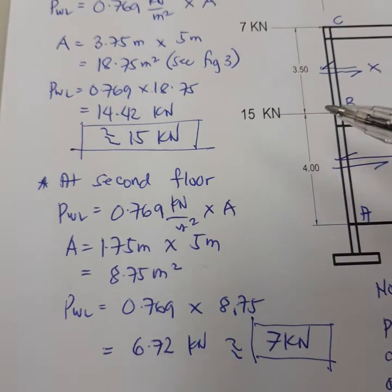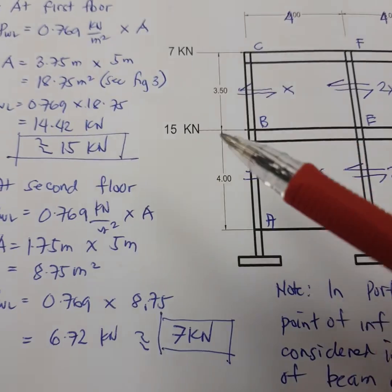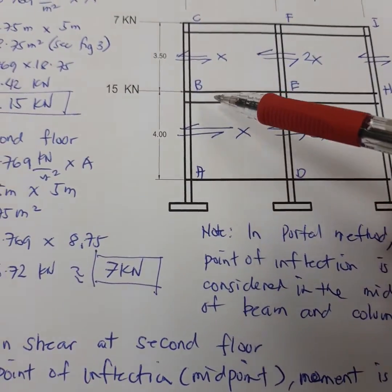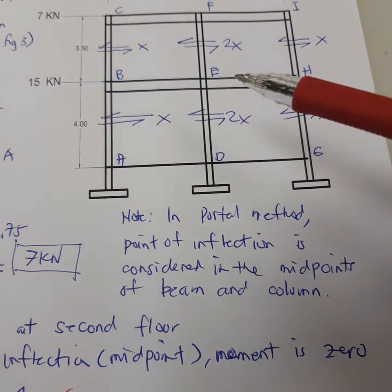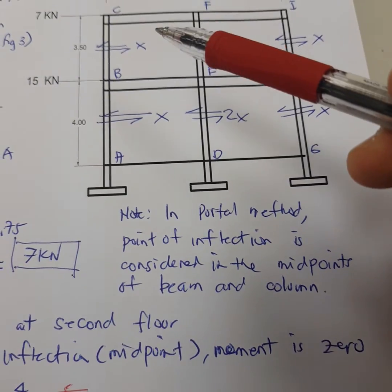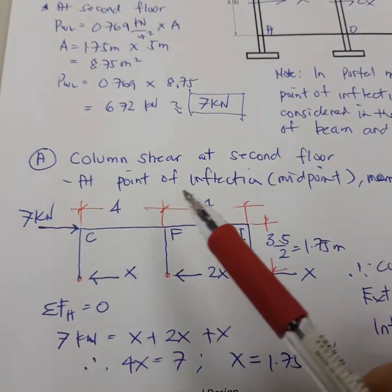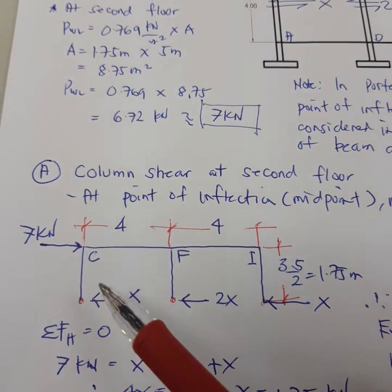Now when you have this, we are going to use the portal method to get the moments in the beam. In the portal method it is assumed that its midpoint has a point of inflection, in other words the moment is zero. Now we get this section at the first floor.